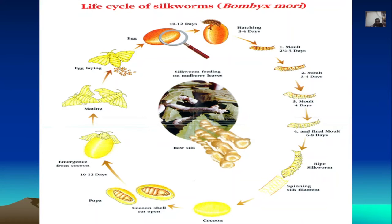The adult moth creates a hole in the cocoon and emerges out, wasting the cocoon. The emergent moth is a non-feeding stage. Once they emerge, they search for a partner, mate immediately, then the male moth dies. The female moth starts egg-laying, and the eggs undergo the hatching process again. The entire life cycle of the silkworm is completed in about 26 to 28 days — within a month, we have cocoons in hand.